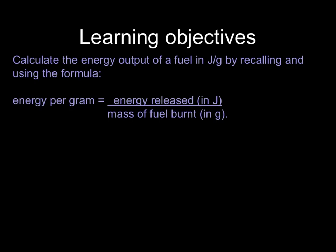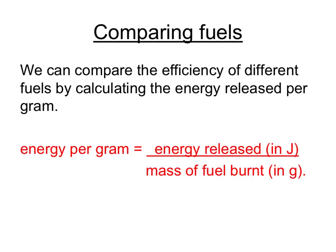Finally, from the higher level part of the specification, you need to calculate the energy output of a fuel in joules per gram by recalling and using this formula. You need to recall this formula — it's not given — where the energy per gram equals the energy released in joules divided by the mass of the fuel burnt in grams. We can use this equation to compare one fuel with another in a fair way, working out how much energy is released by burning one gram of each fuel.